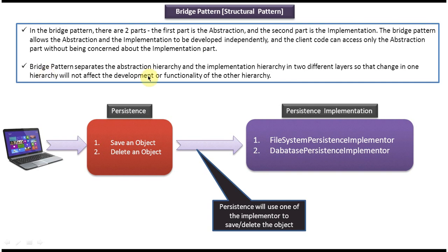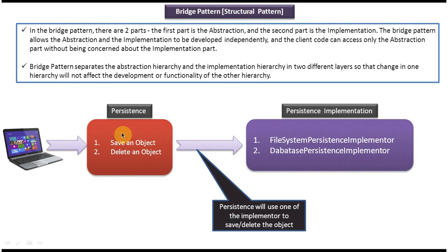The bridge pattern separates the abstraction hierarchy and the implementation hierarchy in two different layers. The abstraction layer is in one layer and the persistent implementation layer is in another layer, so that a change in one hierarchy will not affect the development or functionality of the other hierarchy. If I do any changes in the implementation it won't affect the abstraction layer, and if I do any changes in the abstraction it won't affect the implementation part.